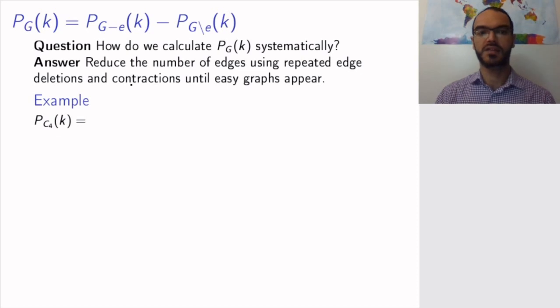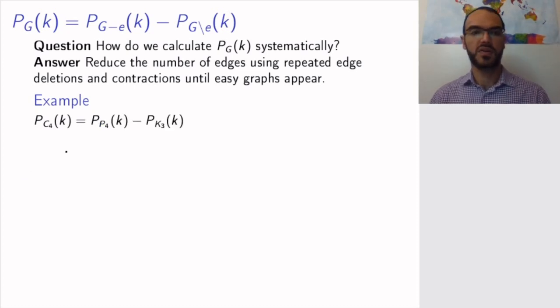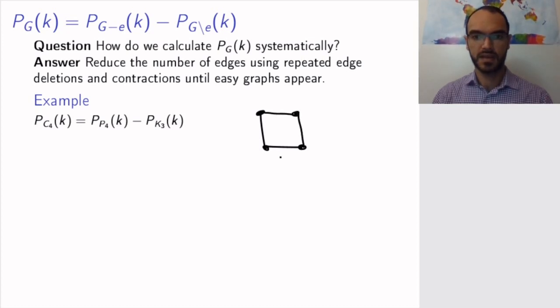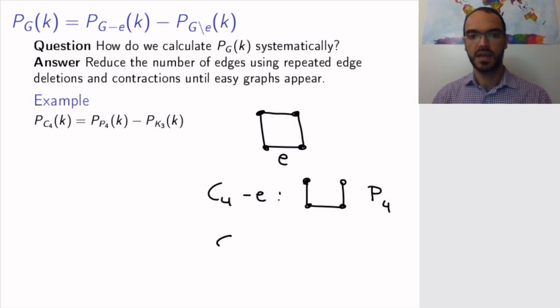So let's look at an example. Let's look at the graph I mentioned before, which is C_4. This graph. So if I have my graph C_4 and I have my edge E, then C_4 minus E is this graph, so this is the path P_4. And C_4 contracted E, so I contract E and I identify the vertices on the end. This is K_3.